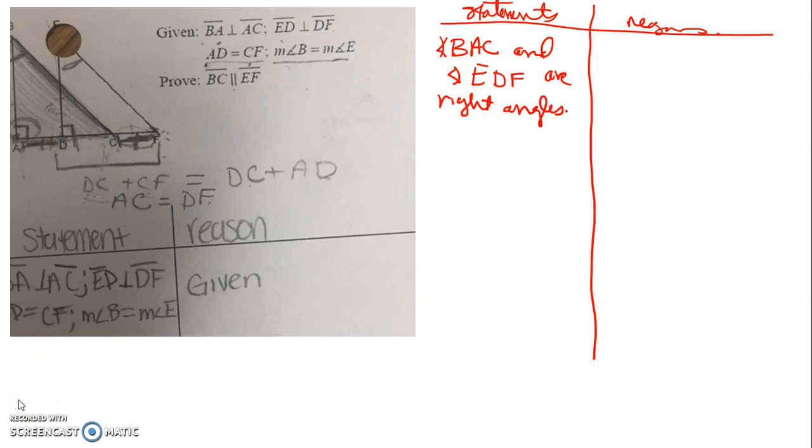All right, sorry about that. I had to pause to talk to my child for a minute. So BAC, this angle right here, and angle EDF, those are right angles. We talked about that in class, and that was because we were given a couple of perpendicular lines. Perpendicular lines form right angles.